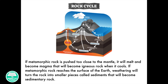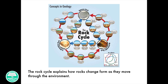If metamorphic rock is pushed too close to the mantle, it will melt and become magma that will become igneous rock when it cools. If metamorphic rock reaches the surface of the earth, weathering will turn the rock into smaller pieces called sediments that will become sedimentary rock. The rock cycle explains how rocks change form as they move through the environment.